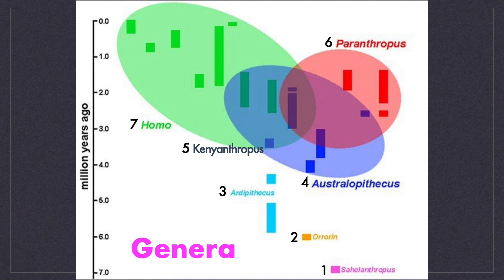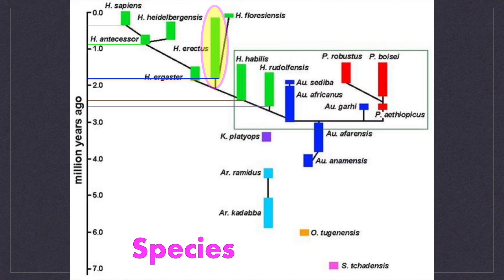The timeline of the genus Homo begins some 2.5 million years ago. We modern humans too are members of this genus. On screen you can see the timeline of different species under the genus Homo. All Homo species are shown in bars of green color. You can see that several Homo species coexisted with Australopithecus and Paranthropus.